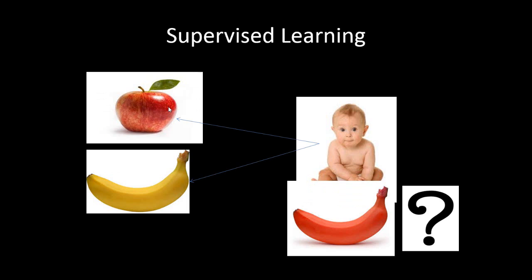So the baby, while learning these two things, keeps in mind that if the fruit in the picture is red and it is circular or spherical, then it is apple. And if the color is yellow and it is not spherical, then it is banana. That is how the baby learns.